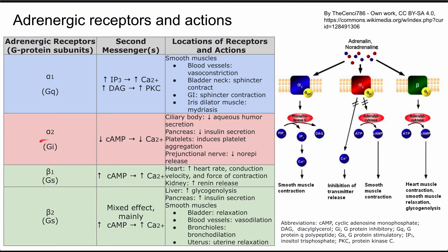Next is alpha-2, which has a Gi protein subunit — an inhibitory G-protein. The second messenger here is decreased cyclic AMP, which results in decreased calcium ion concentration. In the ciliary body, you can have decreased aqueous humor secretion. In the pancreas, decreased insulin secretion. In the platelets, induced platelet aggregation. And in the prejunctional nerves, decreased norepinephrine release.